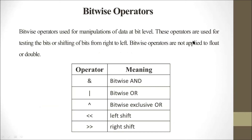Bitwise operators are used for manipulation of data at the bit level. These operators are used for testing bits or shifting bits from right to left. Bitwise operators are not applied to float or double data types. The bitwise operators are: bitwise AND (&), bitwise OR (|), bitwise exclusive OR (^), left shift (<<), and right shift (>>).